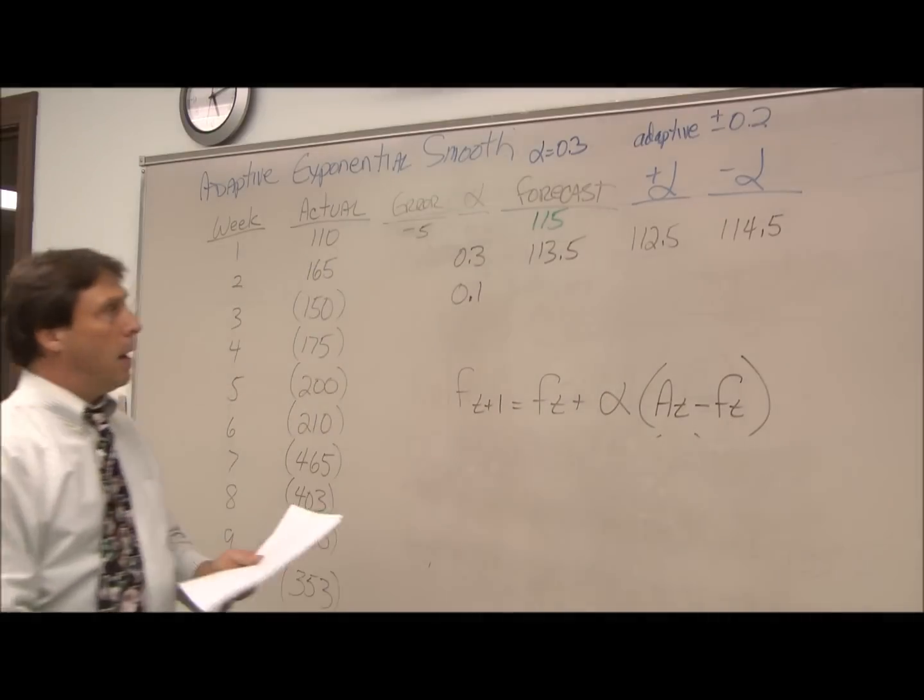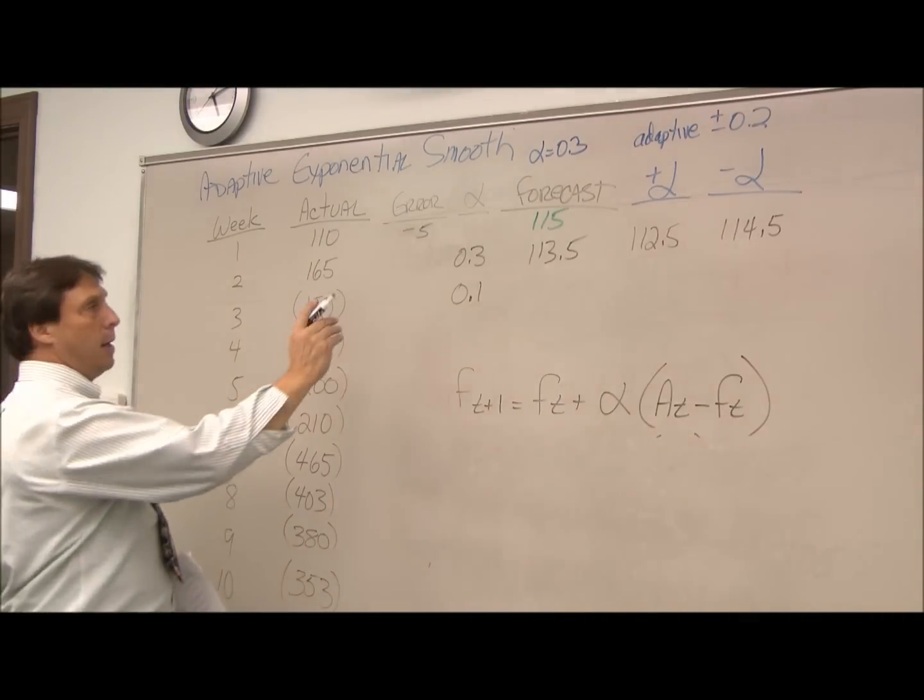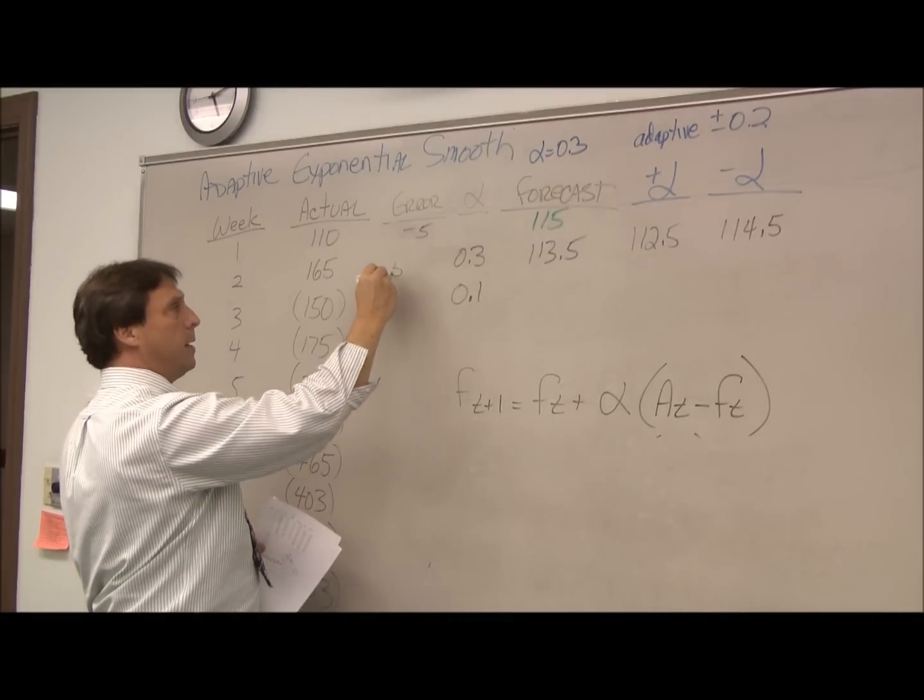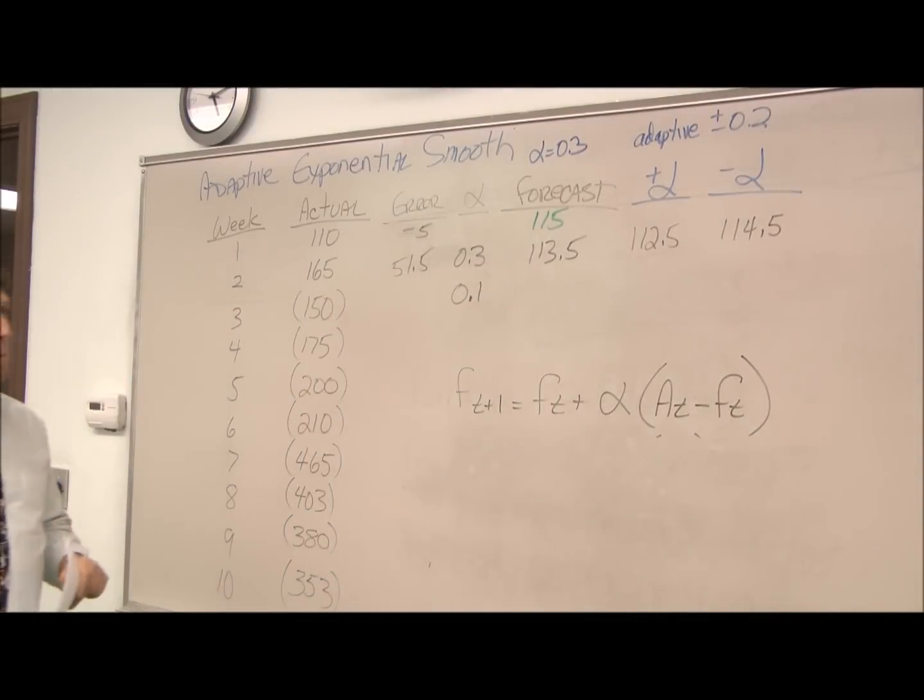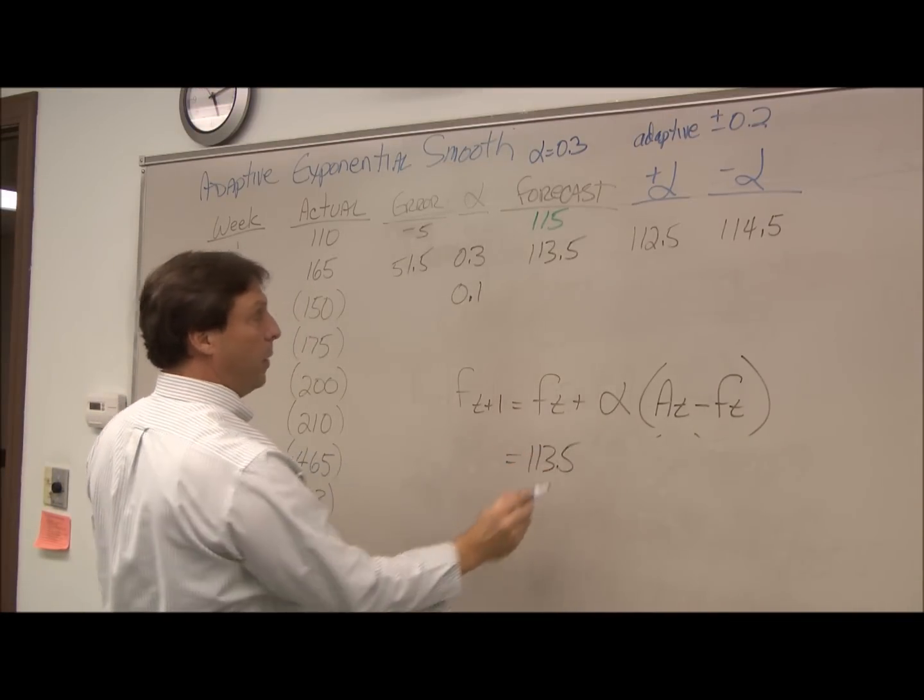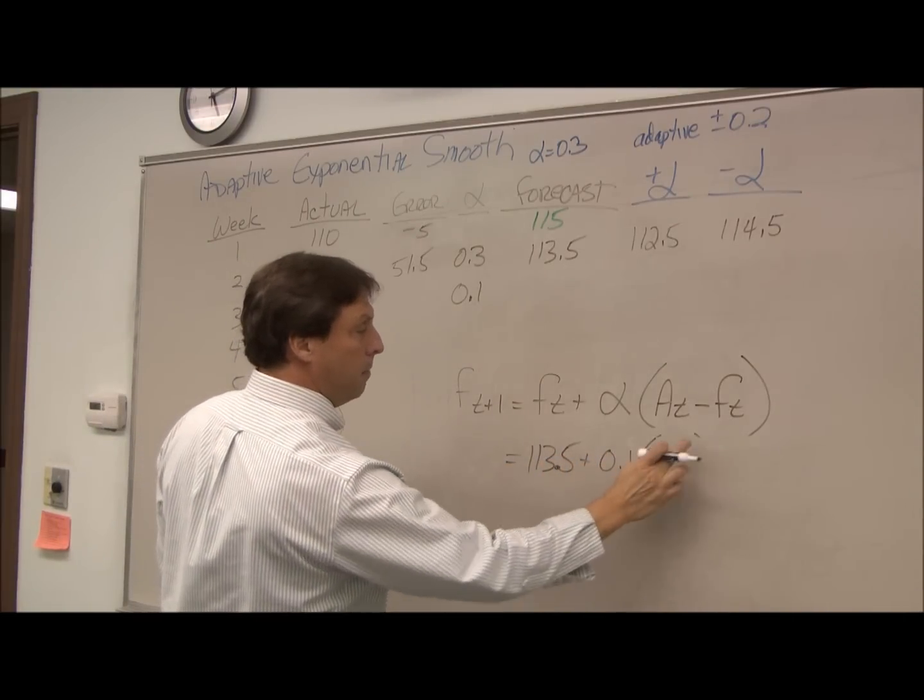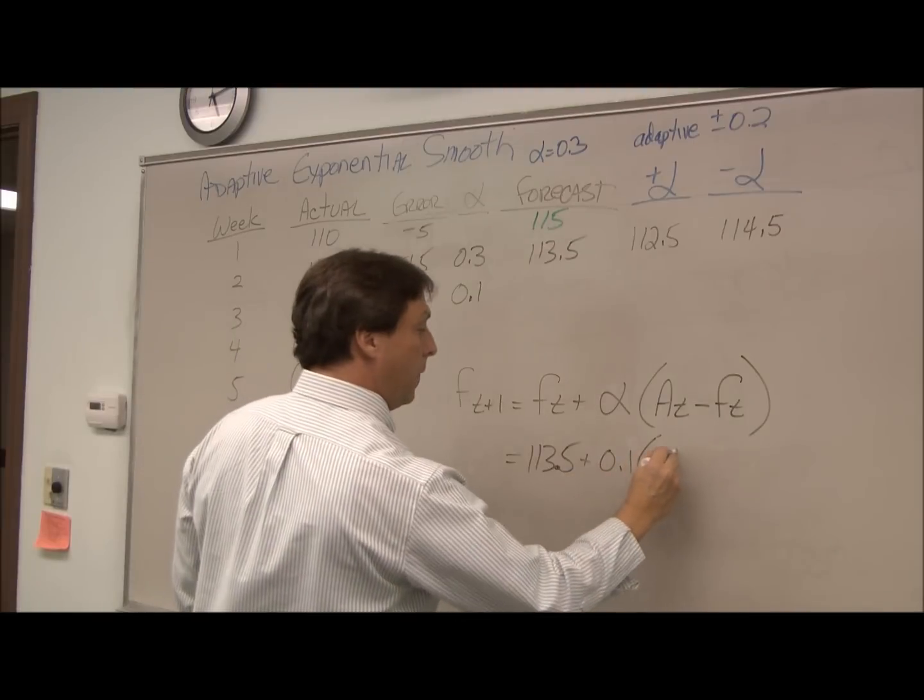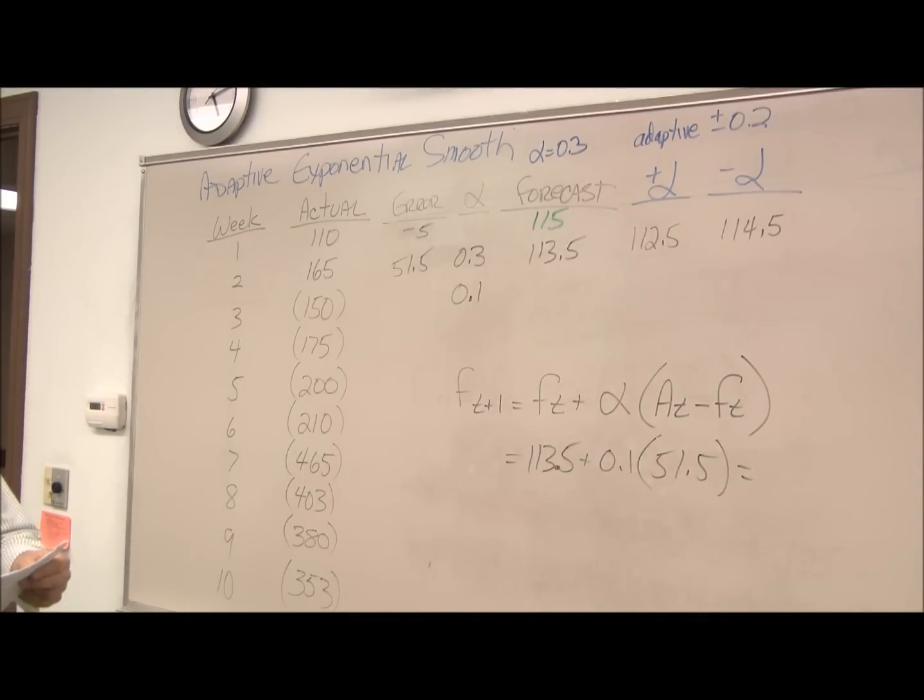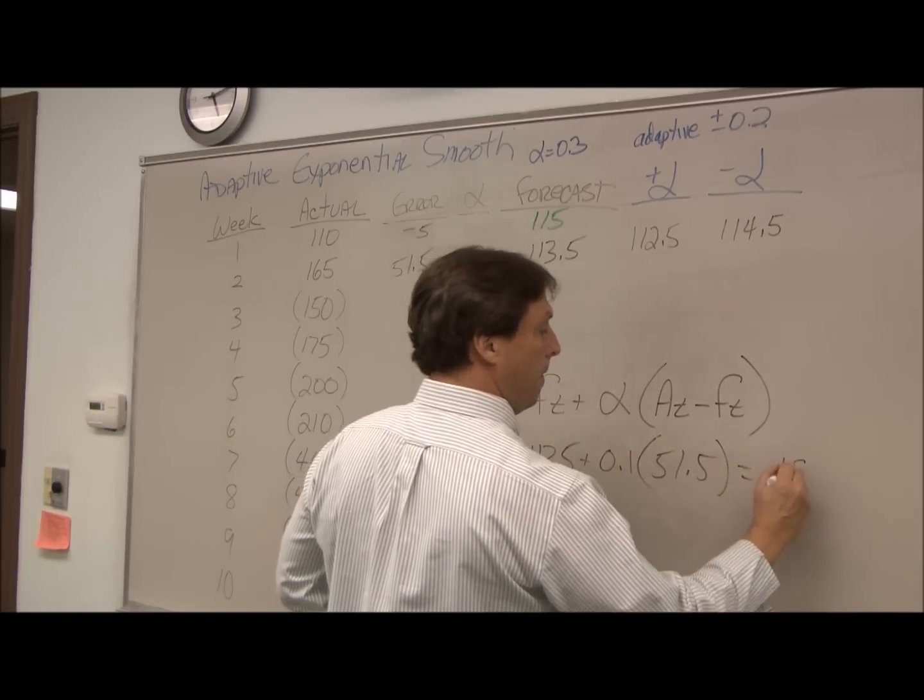Alright, now we're all set to do our forecast for week 3. We calculate our error because we have our actual end now, so 165 minus 113.5 is 51.5. My forecasted amount for week 2 is 113.5, my new alpha 0.1, my error is 51.5, and so my new forecast is 118.65.